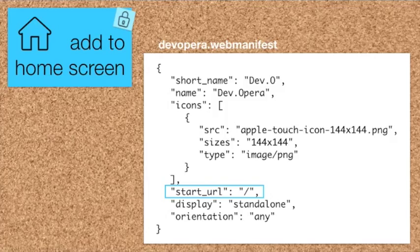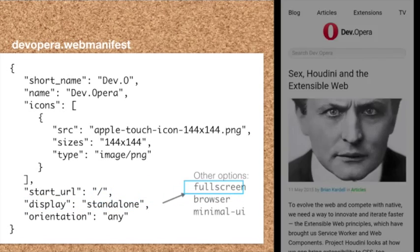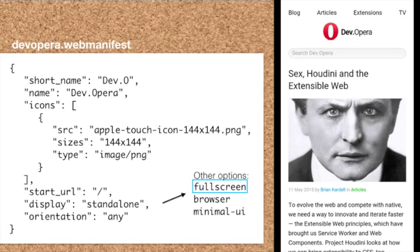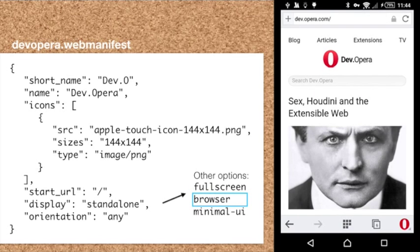The start URL can also include a query string like '?source=homescreen' to track how many people are adding your site to their home screen. The display property is also interesting — the 'standalone' option removes browser UI; 'fullscreen' is even more immersive, hiding the OS navigation bars; 'browser' gives you normal browser view; and 'minimal-ui' falls back to browser UI. Sites without a manifest can also be added to the home screen but will launch in browser UI by default.